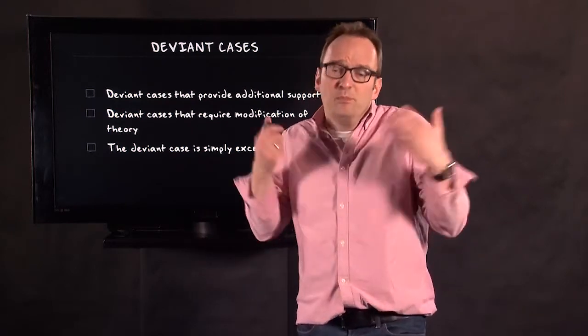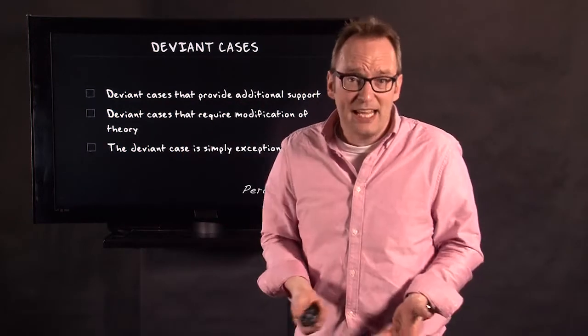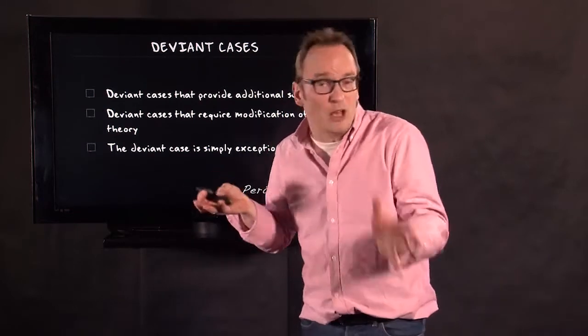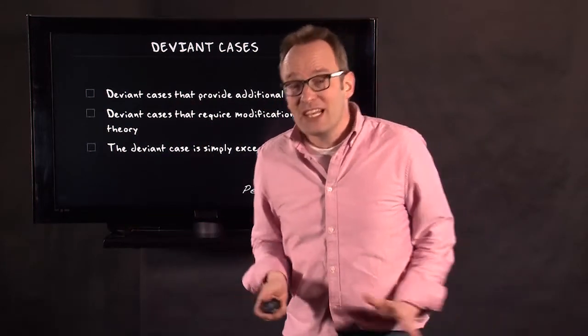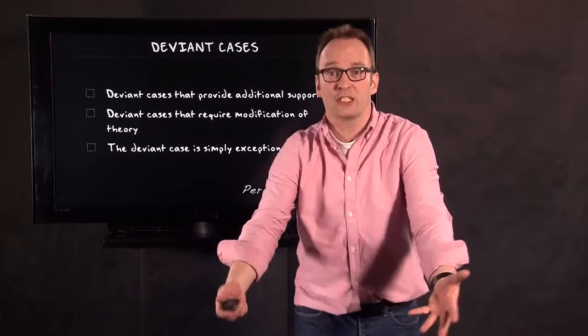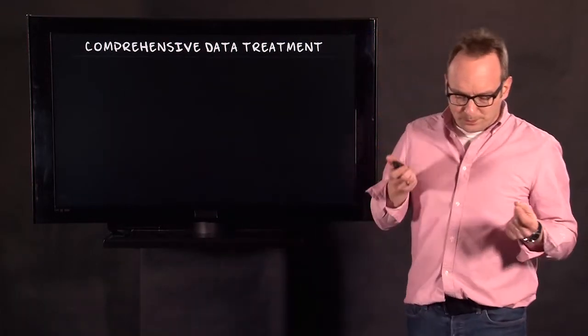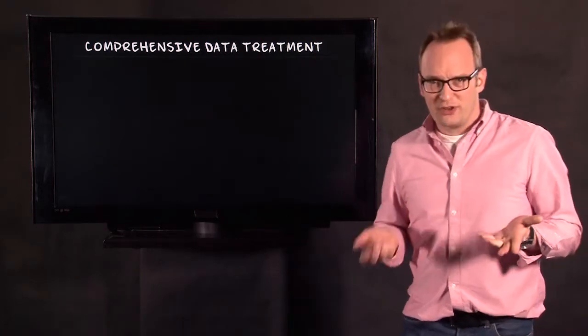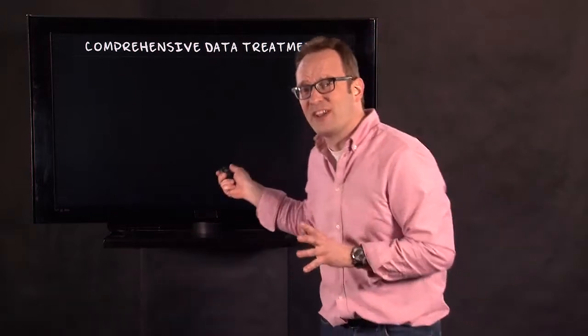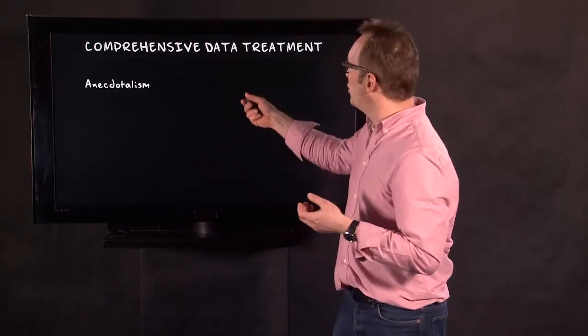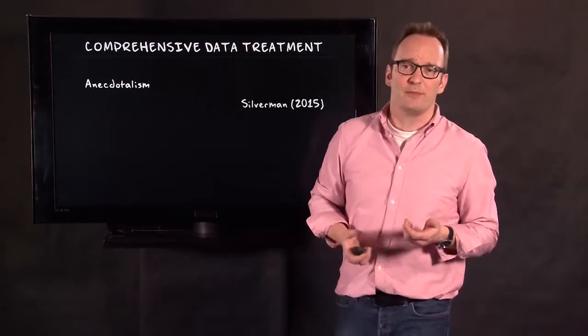Then the third deviant case is a deviant case that is simply exceptional and we have to accept it, either because we can explain it easily because something else is going on, or we cannot explain it but at least we have to describe it then. We have to account for this contradiction. Now, how do we look for contradicting evidence? We will discuss that later.